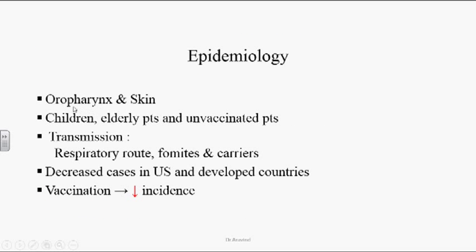Epidemiology: These organisms are found in the oropharynx and skin. Children, elderly patients, and unvaccinated individuals are highly susceptible. Transmission occurs through the respiratory route, fomites, and carriers — people harboring the organism without infection can spread it. There are decreased cases in the US and other developed countries due to wide vaccination, but underdeveloped and developing countries with poor vaccination programs have a higher incidence.